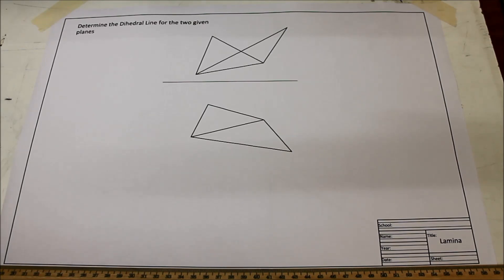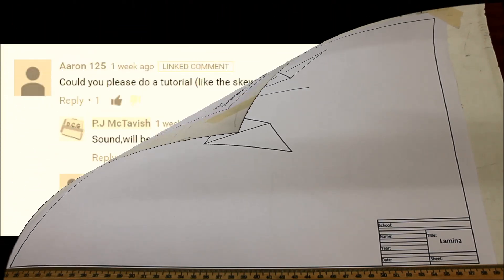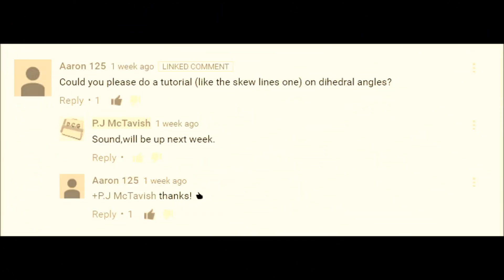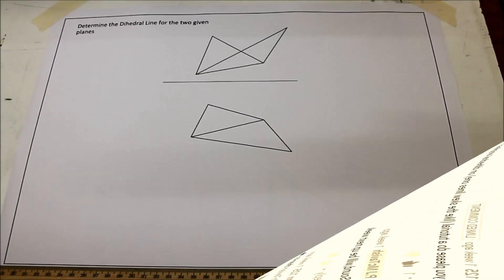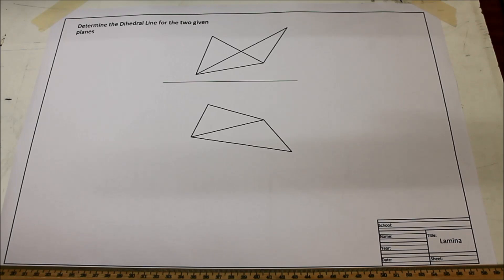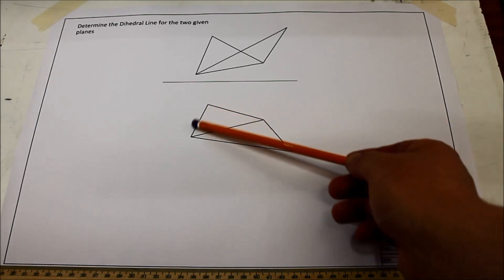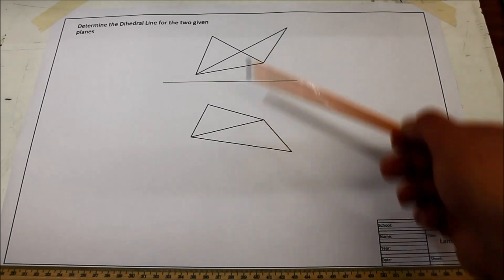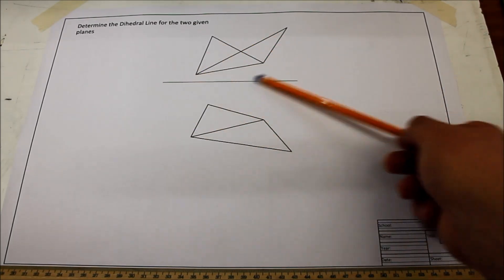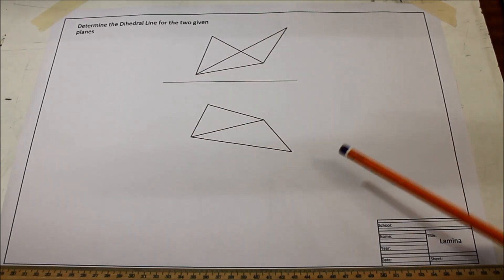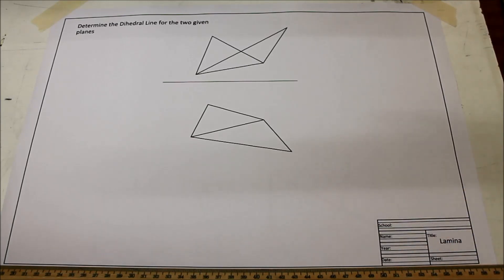Hi, I'm PJ Mitavich and welcome back to another DCG tutorial. This one is literally going to be a tutorial just like the skew lines one. I was asked to do one on the dihedral angles which you see here. I'm going to go through a few of the different combinations that you get — starting off with 4.1 and then skipping a 5 point to go straight into a 6.1.